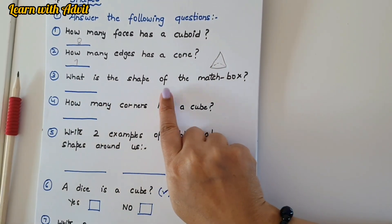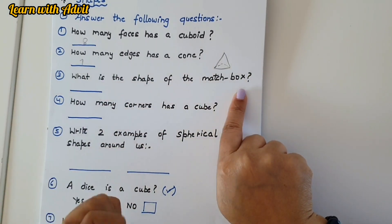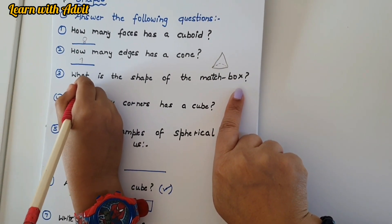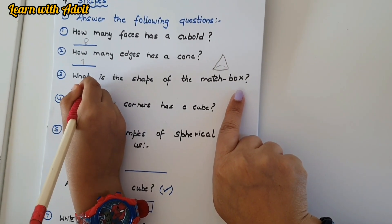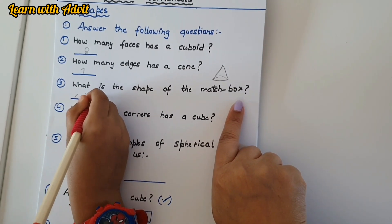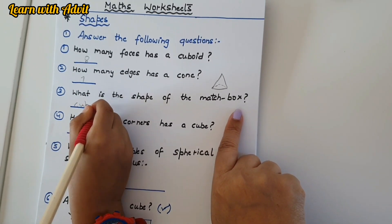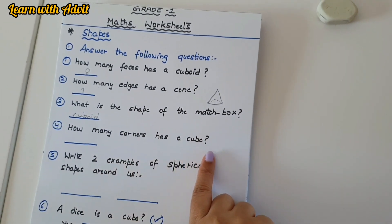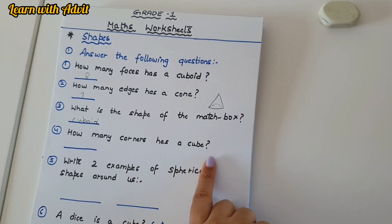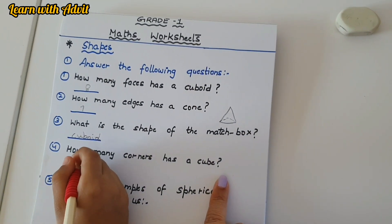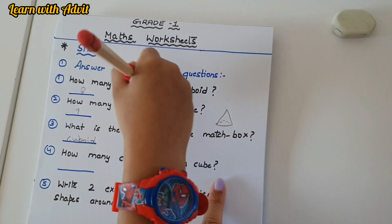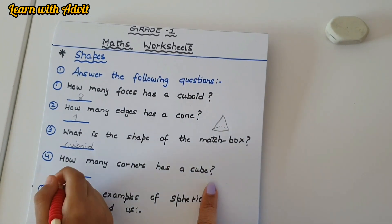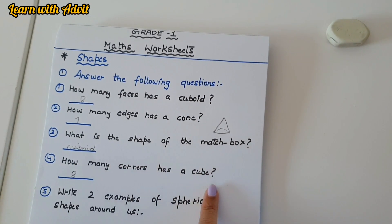What is the shape of a matchbox? A cuboid — very good! How many corners has a cube? A cube is similar to a cuboid; the faces and corners are the same. So a cube has 8 corners.